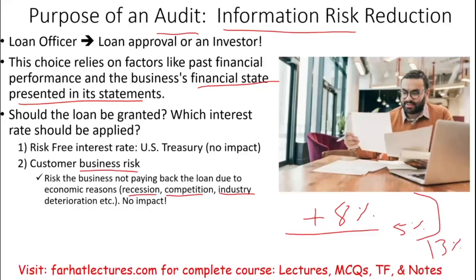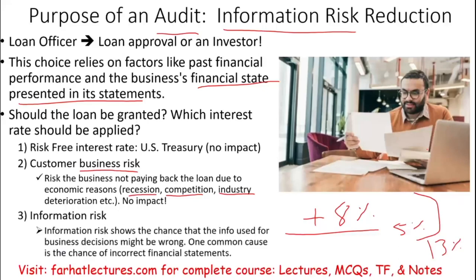And that risk is called information risk. The information risk is the risk that the information you are relying on is incorrect. You are relying on the financial statement to look at their past performance to predict the future. But how about if those statements themselves are unreliable? They cannot be relied on. That's the information risk.